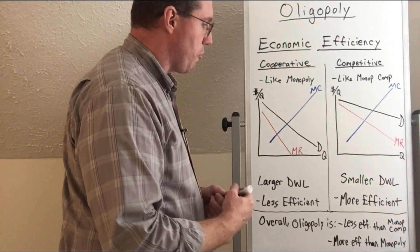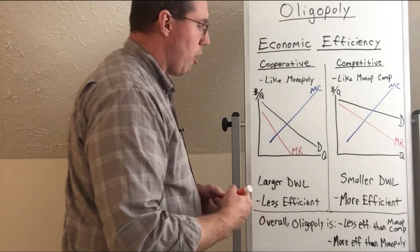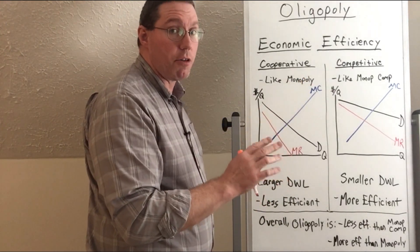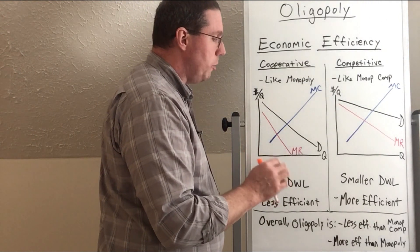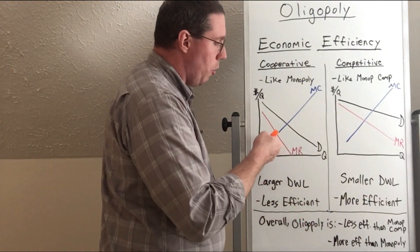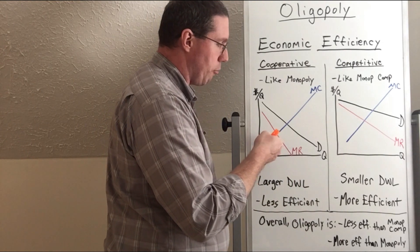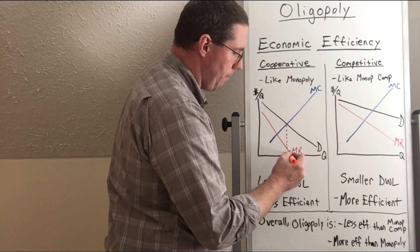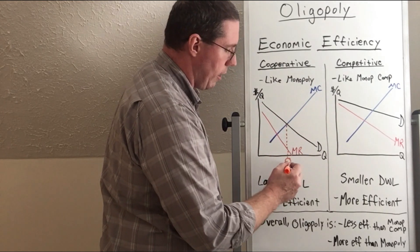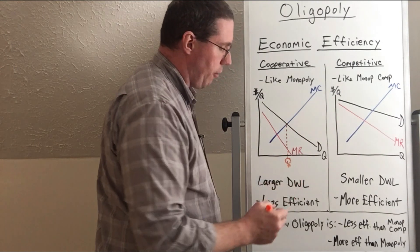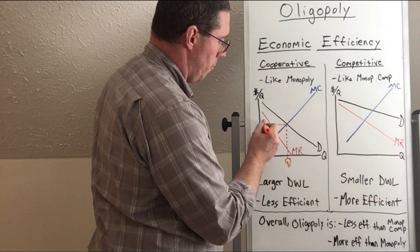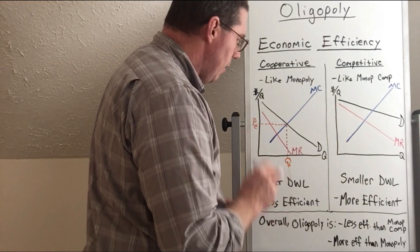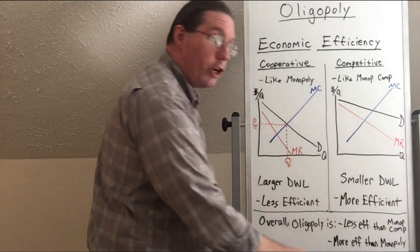First, we're going to identify the equilibrium price and quantity. Remember that our marginal cost curve is basically our supply curve. So in an efficient market, we should see production at the quantity and price where marginal cost equals the demand curve. This gives us the efficient quantity — we'll call it Q with a little 'e' for efficient — and from the demand curve, this would be the efficient price. But this group of firms are all going to collude.